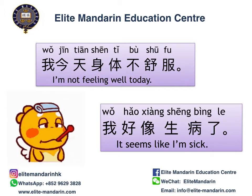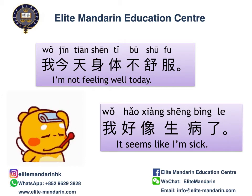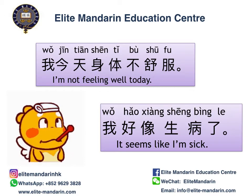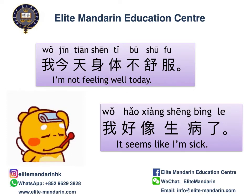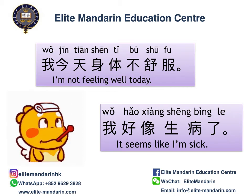Next sentence: 我好像生病了. 好像 means 'it seems like' or 'it seems that' — meaning you are not sure. So 我好像生病了 means 'It seems like I'm sick.'